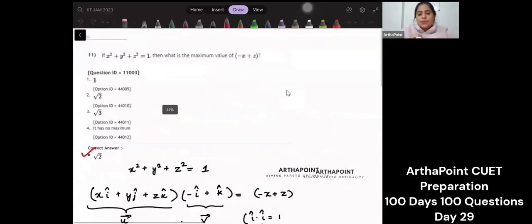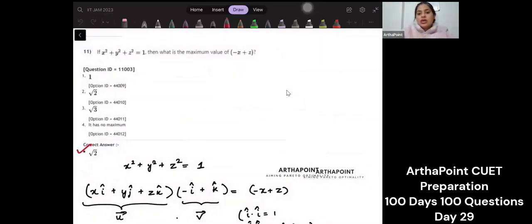This question actually uses the properties of vectors. So it says x square plus y square plus z square is 1. Just tell me if you could think of any other way of solving it. We can discuss that also on the group. So find the maximum value of minus x plus z.